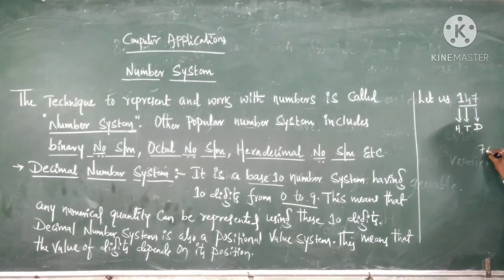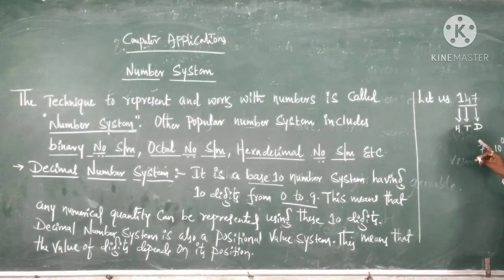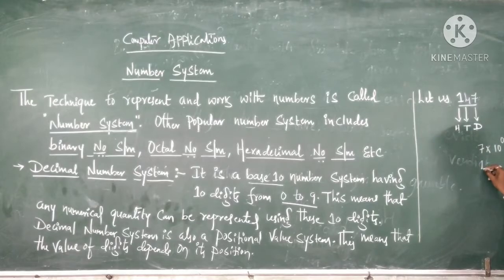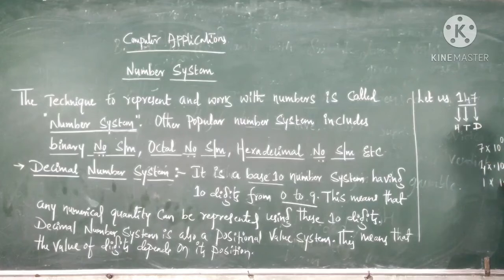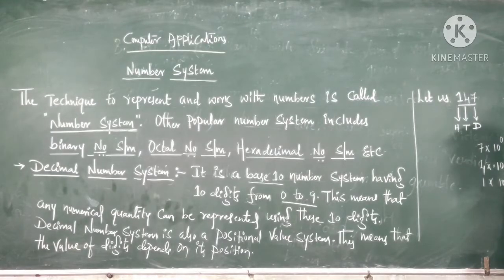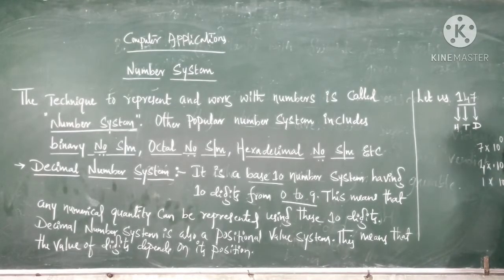Seven is placed in zero position — that is the digits value. Four is present in the tenth position, so ten to the power one. One is present in the hundred position — that is ten square. Ten square is nothing but 100. Ten to the power one is nothing but 10. Ten to the power zero is nothing but 1.